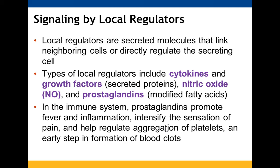Local regulators are secreted molecules that only impact neighboring cells, allowing them to work together or regulate the secreting cell. Examples include cytokines, growth factors, nitric oxide, and prostaglandins. In the immune system, prostaglandins promote fever and inflammation, increase pain sensitivity, and help aggregate platelets, leading to blood clot formation.